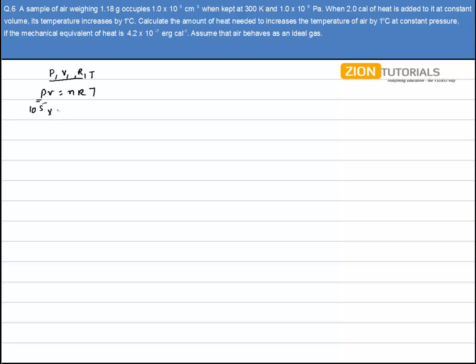So pressure is 10^5, volume is 10^3 x 10^-4, that will convert the cm^3 into meter cube, equals n (the number of moles I have to calculate) times 8.314 times temperature. The temperature is given as 300 Kelvin.